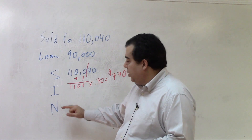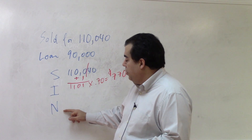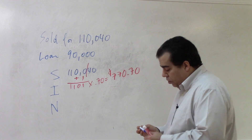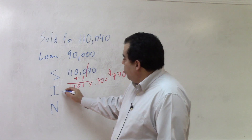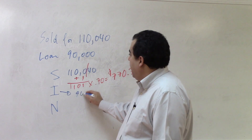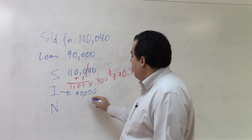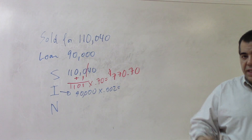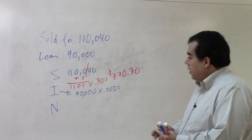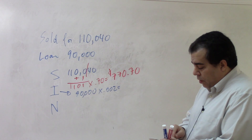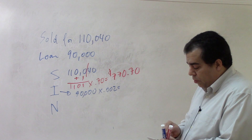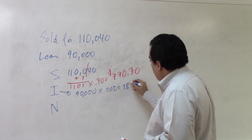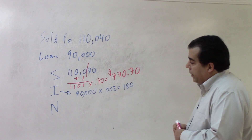For the intangible tax on the mortgage — the I in taxes are a sin — I use the loan amount because the mortgage has to do with the loan. I take the $90,000 loan amount and multiply by 0.002. That gives us $180 as the intangible tax on the mortgage.